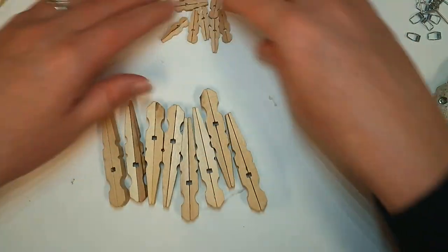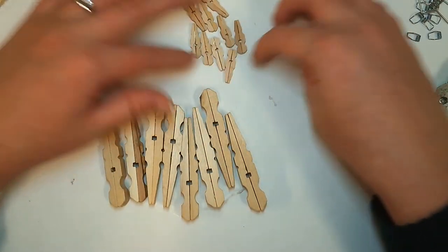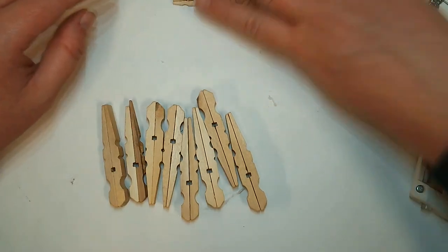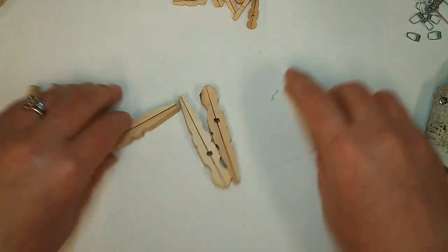Now, once you have all of your spikes or spokes all glued, go ahead and set your small ones to the side again and we're going to start with our first big snowflake.